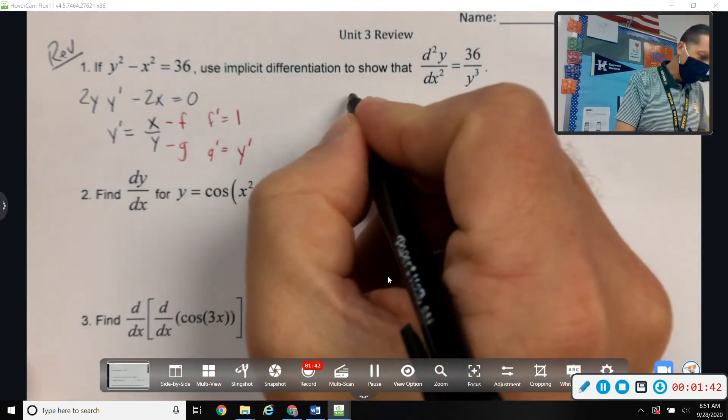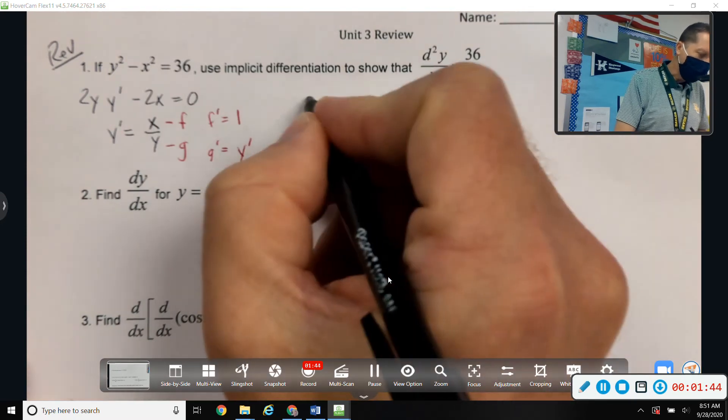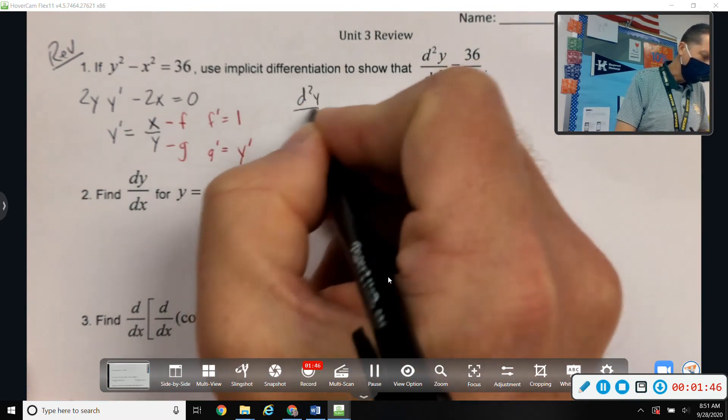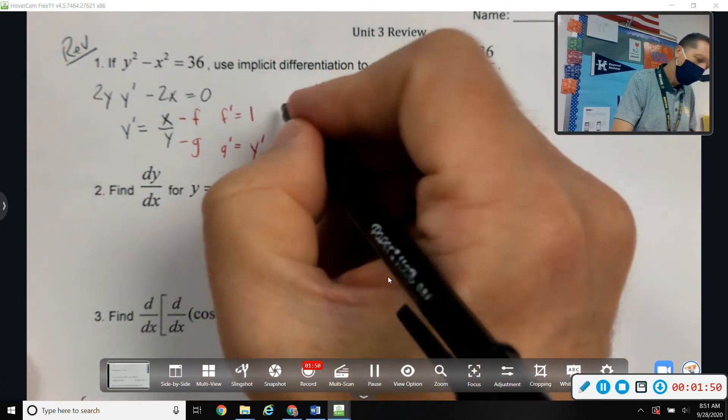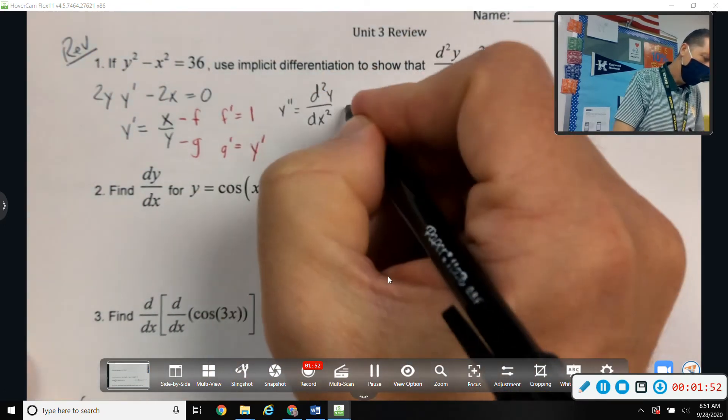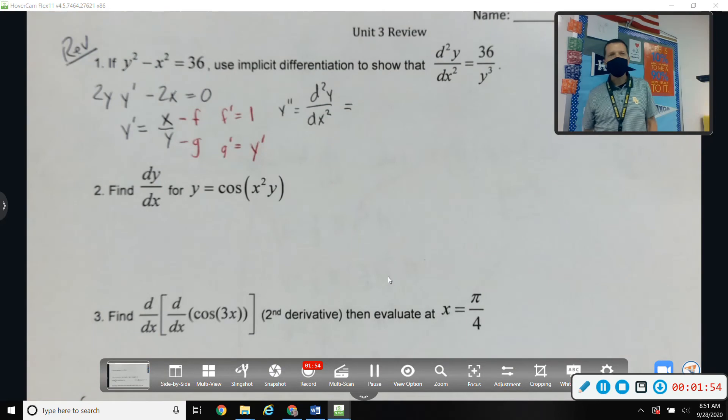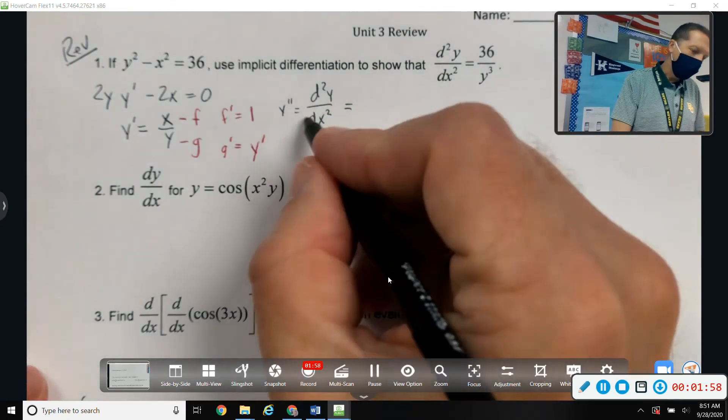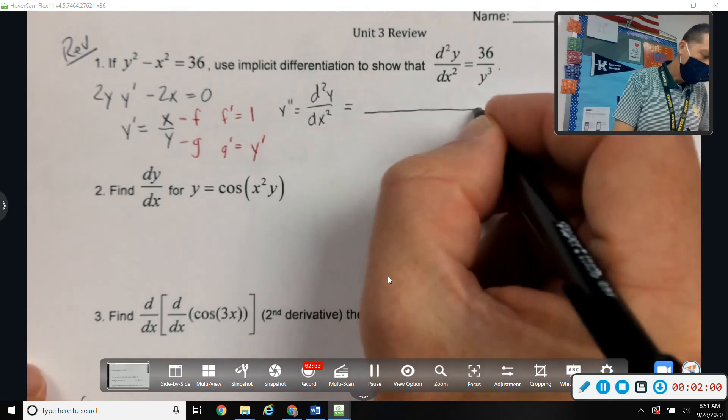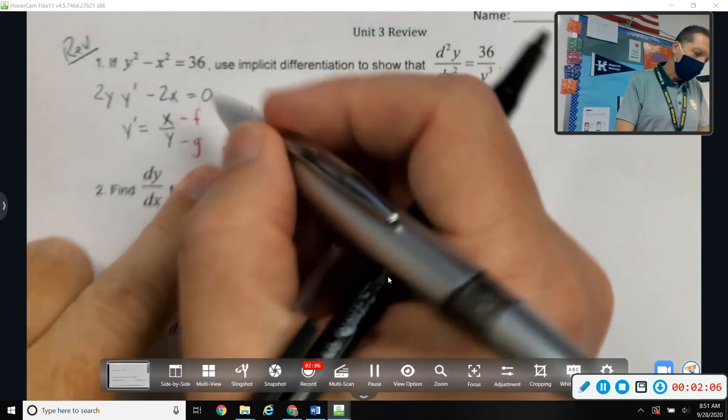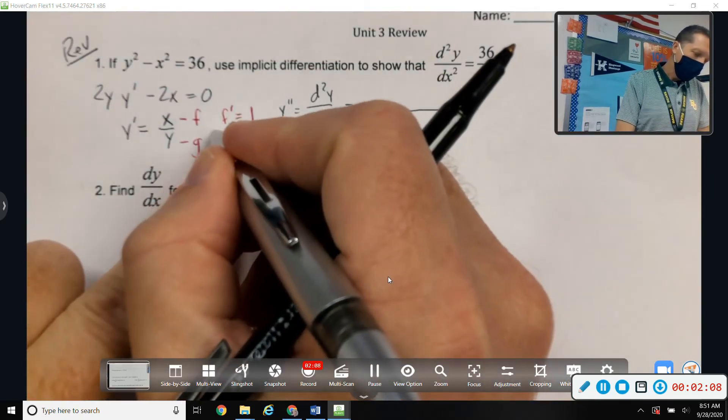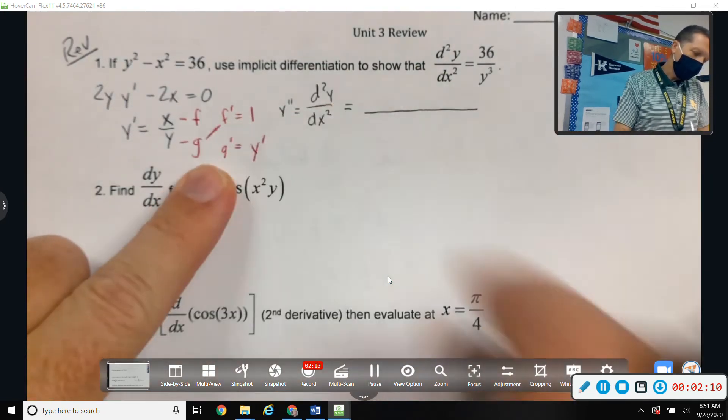So the second derivative then. I guess I'll switch my notation to match what it asked for, although it wouldn't be wrong to leave it as y''. But just since it explicitly asked for the second derivative in that form, I'll write it that way. Okay, g*f' - f*g', because the g*f has to come first. It's the only way these things work. So g*f' has to come first.